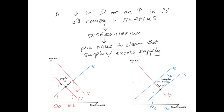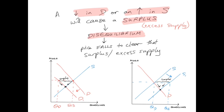The opposite is true: a decrease in demand or an increase in supply creates a surplus — a situation of excess supply. This throws the market into disequilibrium and exerts a downward pressure on price, so price gradually falls to clear that surplus. When demand decreases from D to D1, shifting left, this surplus slowly exerts downward pressure on price. As price falls, quantity demanded increases and quantity supplied decreases until a new equilibrium is reached.